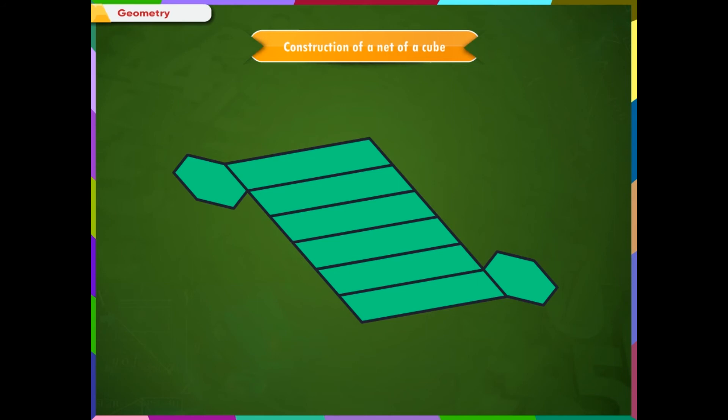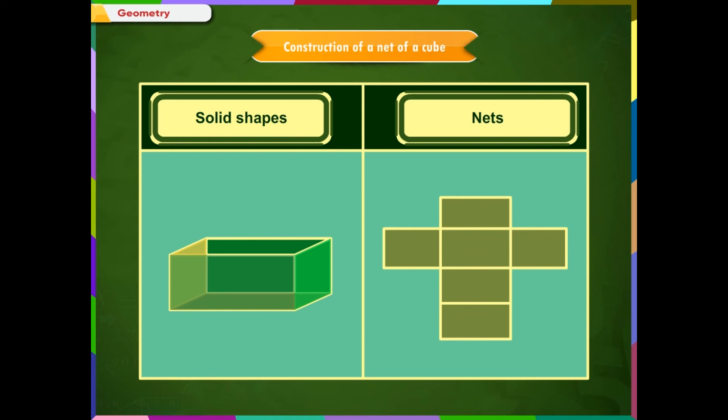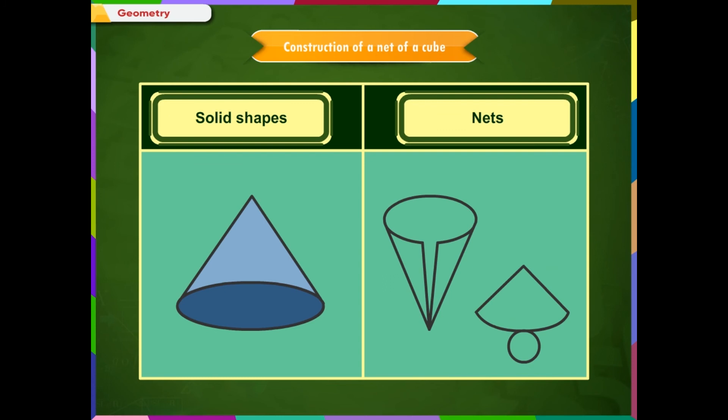Let us observe some solid shapes and their nets in the table as shown on the screen. Cube: Let us cut this paper cube in the corners and flatten it. We will get a net as shown. Cuboid: Let us cut this paper cuboid in the corners and flatten it. We will get a net as shown. Cone: Let us cut this paper cone in the corners and flatten it. We will get a net as shown.